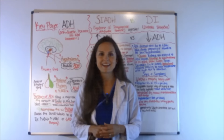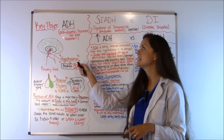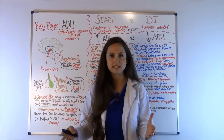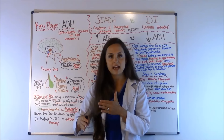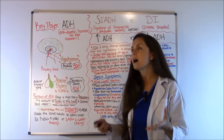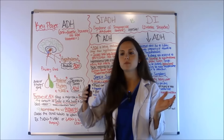The key player in these two conditions is called the anti-diuretic hormone, ADH, also sometimes called vasopressin. This hormone plays a huge role in both SIADH and diabetes insipidus, and they work in opposite directions. In SIADH you're going to have an increased anti-diuretic hormone, and in DI — diabetes insipidus — you're going to have a decrease. If we know what ADH does normally, it'll help us understand what happens when there's too much or not enough of it.